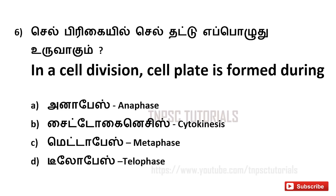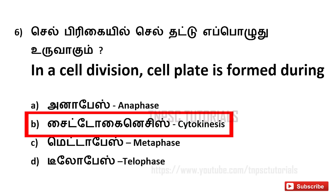Sixth one: In cell division, the cell plate is formed by — A. anaphase, B. cytokinesis, C. metaphase, D. telophase. And the answer is B. cytokinesis.